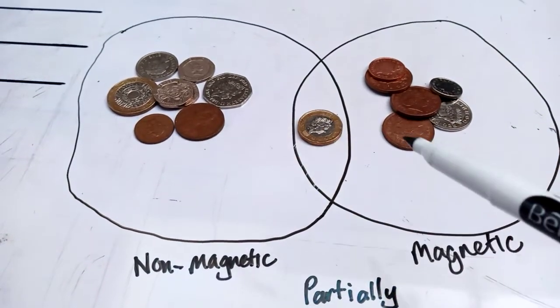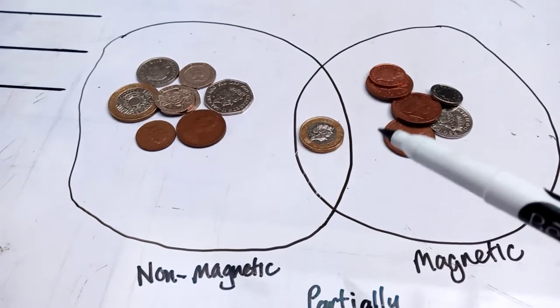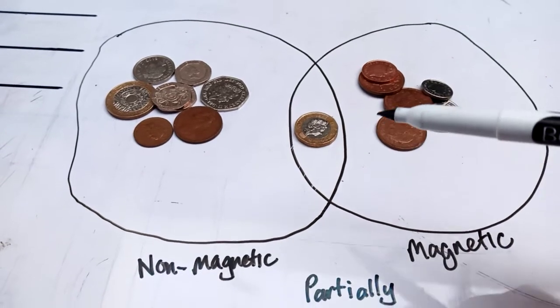With your 15 coins you might have different numbers of coins because your coins might be different sorts to mine.